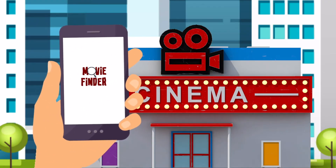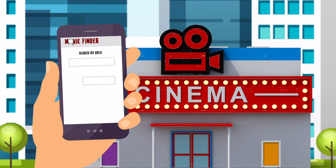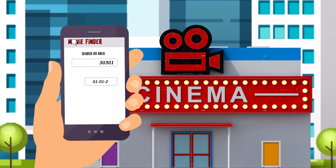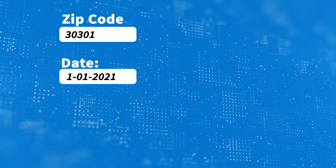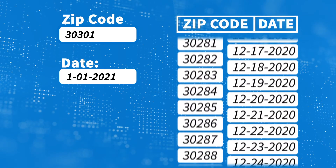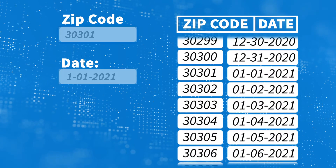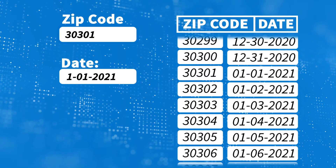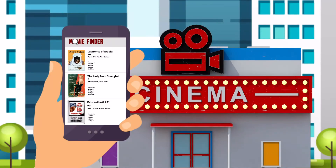Suppose you are looking at movie times in your area using a web application. First, the presentation layer displays a web page with fields for you to enter some necessary information, like your zip code and the date you'd like to see the movie. This info is passed on to the application layer, which formats a query. That query is then passed on to a database layer, which runs the query and returns the results formatted into a web page back to the application layer — in this case, a list of available movies in your area.